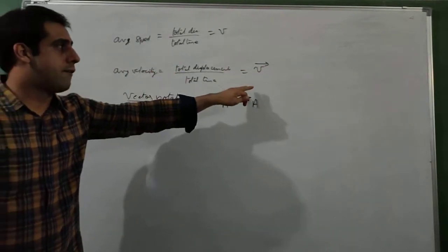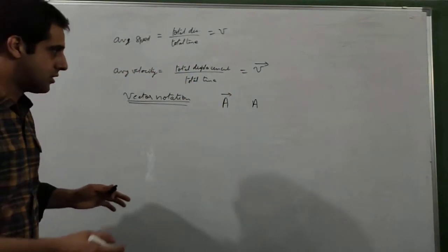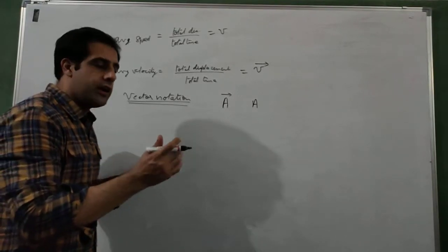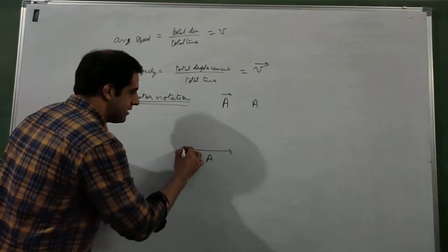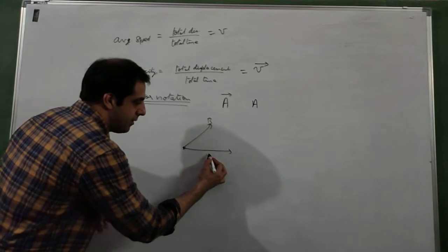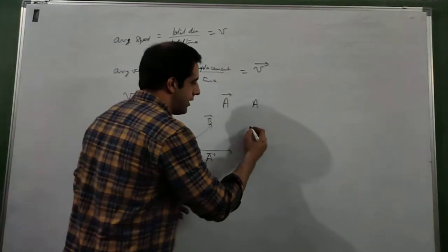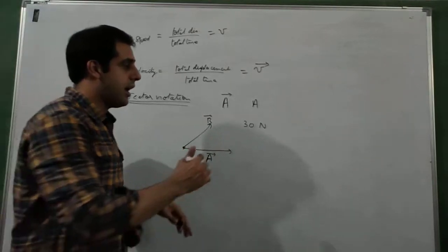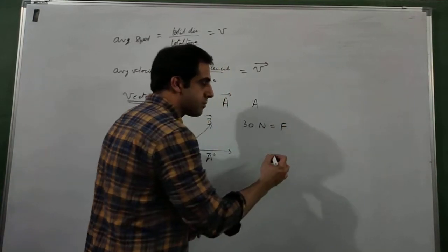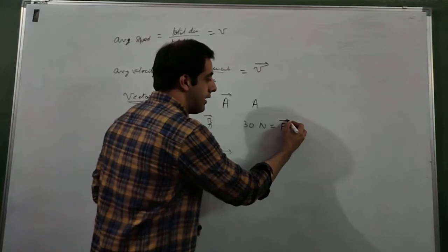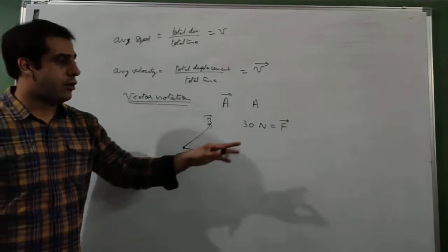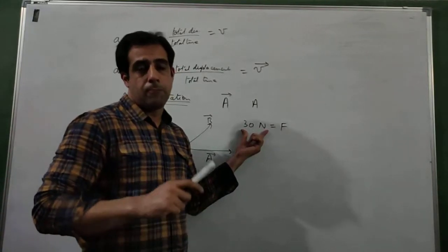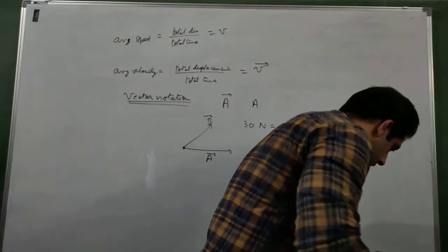We must be very careful about vector notation, otherwise the meaning changes. If we have two vectors A and B starting from the same point but going in different directions, we write them with arrows above: vector A and vector B. Force is a vector quantity — if I write 30 newtons without a direction, that is scalar. To write force as a vector I must put an arrow above F. Without this notation I am giving only the magnitude, not the direction, which is very important for vector quantities.